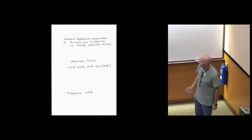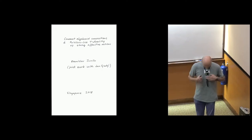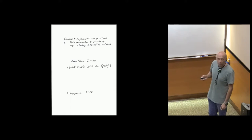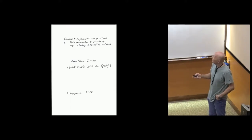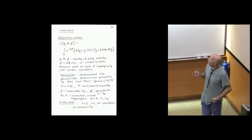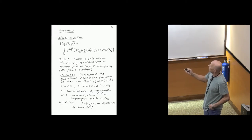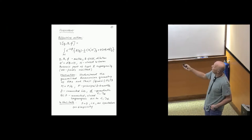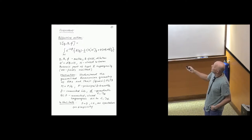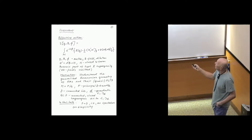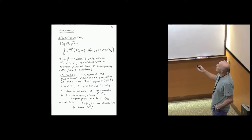Thank you for introducing me and thank the organizers for the opportunity to give this talk. I joined work with my former PhD student Jan Visoki. What I will talk about is effective actions of the type where you have a metric, a B field, and a dilaton. This is the scalar curvature of the metric, this is essentially H squared, and it's the kinetic energy for the dilaton.